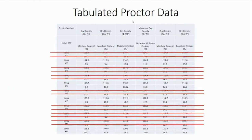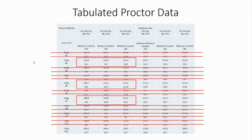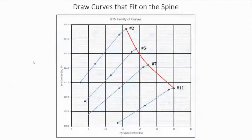The next step to define our family of curves is to plot each individual curve that fits on the spine, but we are only concerned with the dry side — those proctor points that are dry of optimum moisture content. For curve 2 we plot those three dry-side points and connect them to draw the proctor curve. We do the same for curves 5, 7, and 11, plotting their respective points and drawing each curve.